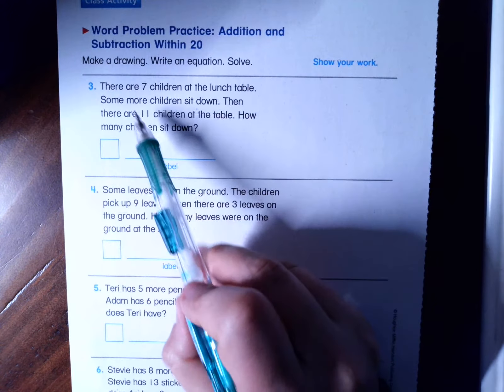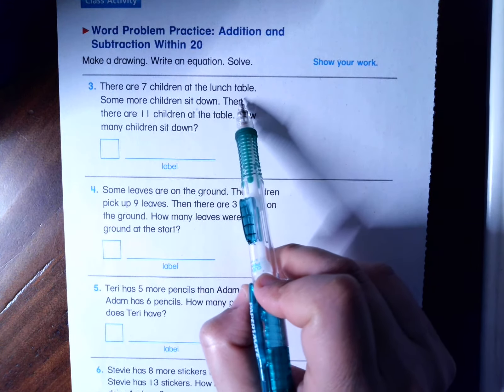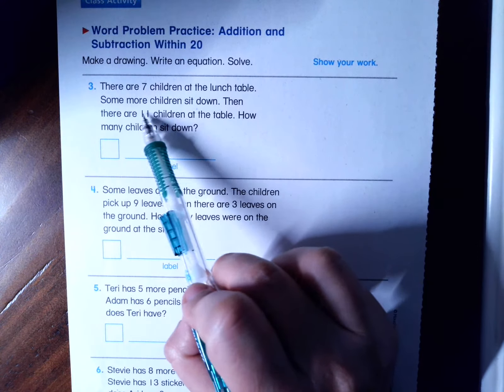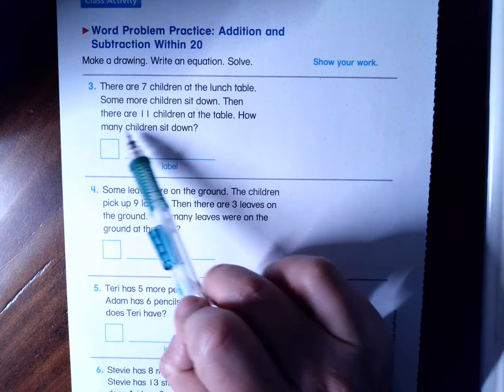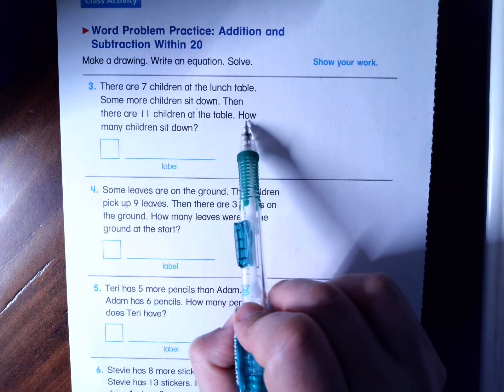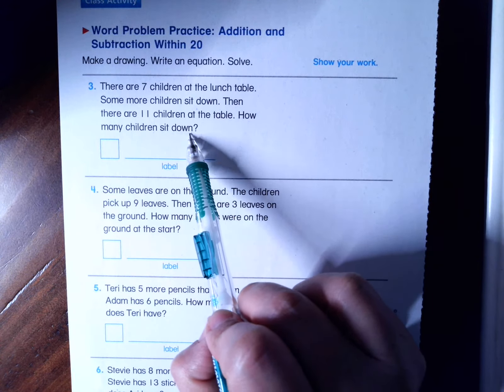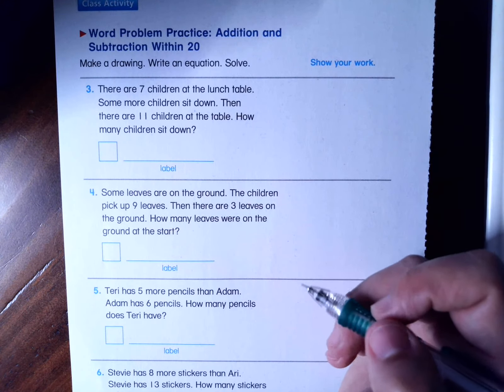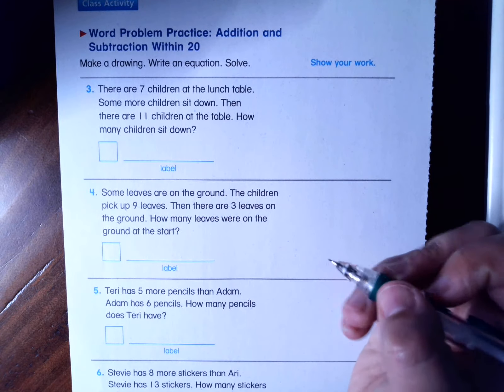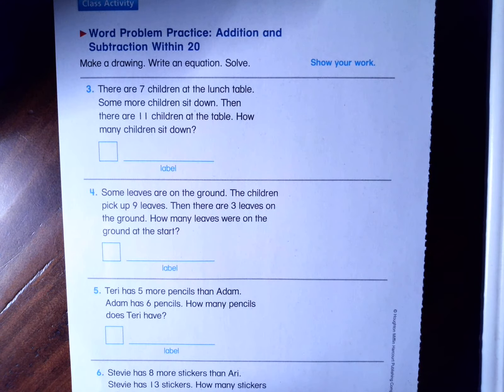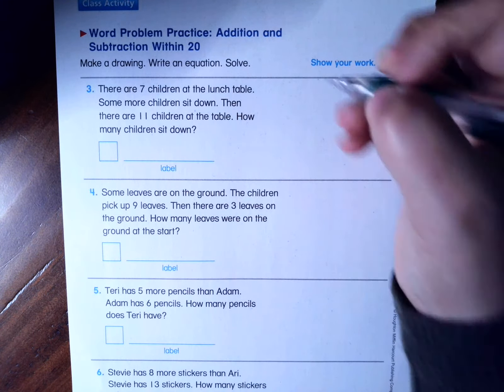So question number three, it says, there are seven children at the lunch table. Some more children sit down. So this is a pretty standard word problem.